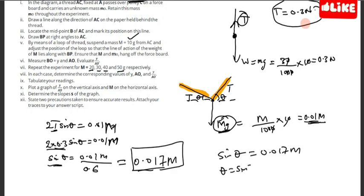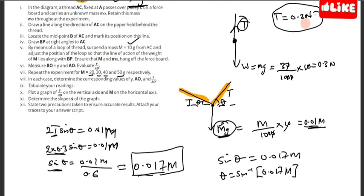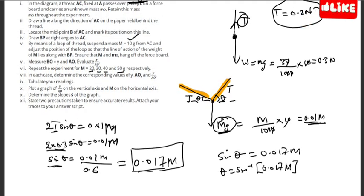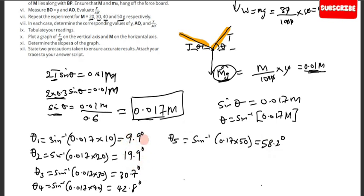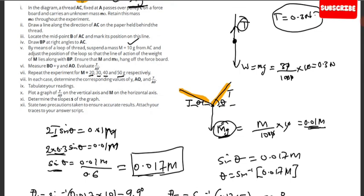So sinθ equals 0.017m, and theta would be the sine inverse of 0.017 times whatever m is. Plugging in the values — for m equals 10g, 20g, 30g, 40g, 50g — my recorded values of theta are: θ₁ = 9.9°, θ₂ = 19.9°, θ₃ = 30.7°, θ₄ = 42.8°, and θ₅ = 58.2°.